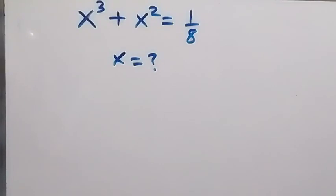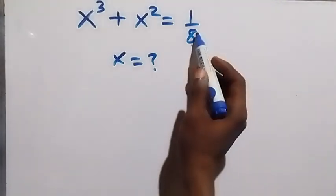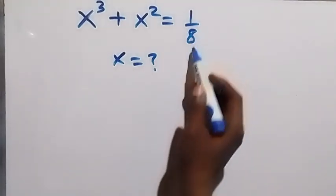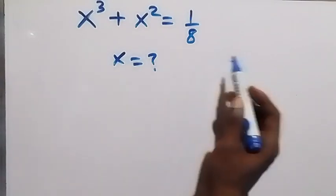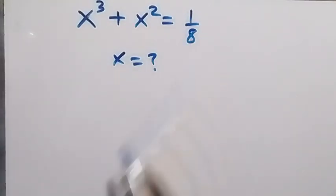Hello, you are welcome. How to solve this nice algebra with an empiric equation. From here we can remove the fraction and multiply through by 8.